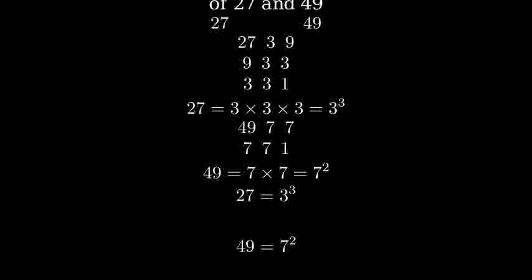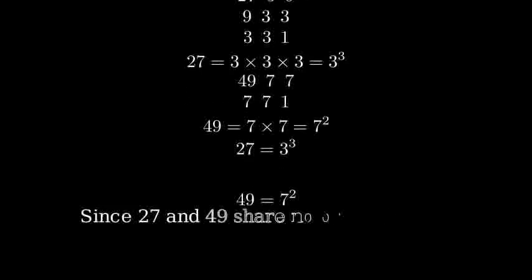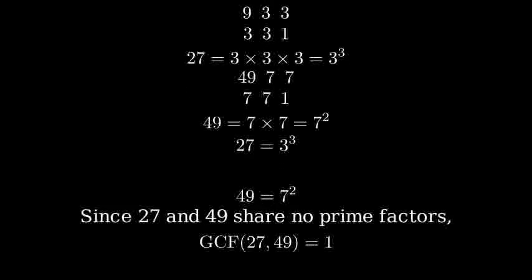When two numbers share no prime factors, their greatest common factor is 1. Therefore, the greatest common factor of 27 and 49 is 1.